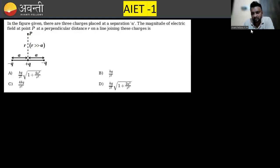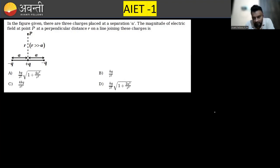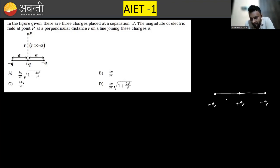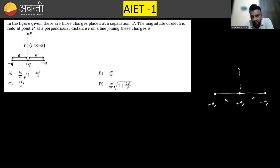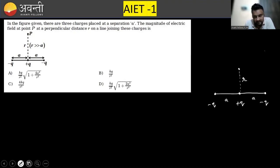Some very basic questions are skipped in this session. In our first question, there are three charges placed at a separation a. I will draw this diagram again. There is a minus q, then a plus q, and again a minus q charge. These three charges are placed at a separation of a. There is a perpendicular distance — some point at a distance r — and we need to find the electric field at this point.